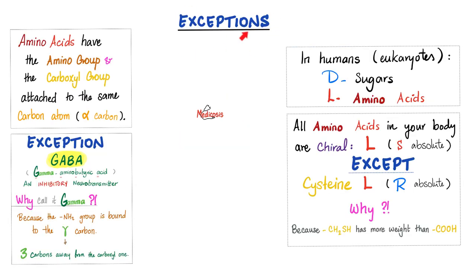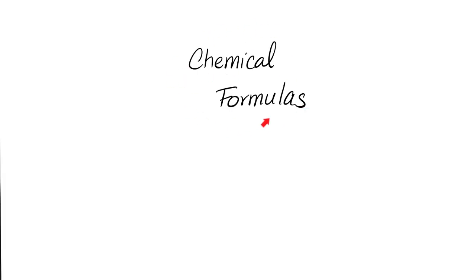Let's talk about the exceptions we discussed today. Amino acids have amino group and carboxyl group attached to the alpha carbon — except gamma aminobutyric acid (GABA), because that's the gamma carbon. Your amino acids should be L, which means chiral — L and S — except cysteine: it's L but R. We didn't talk about chemical formulas in this video, but please make sure to review your chemical formulas.